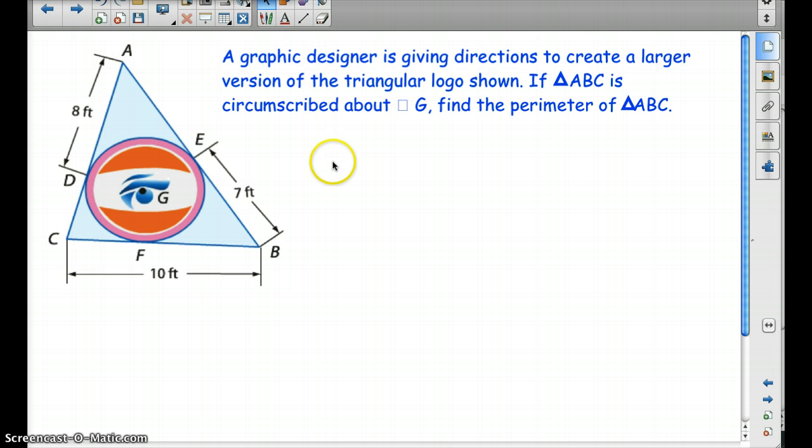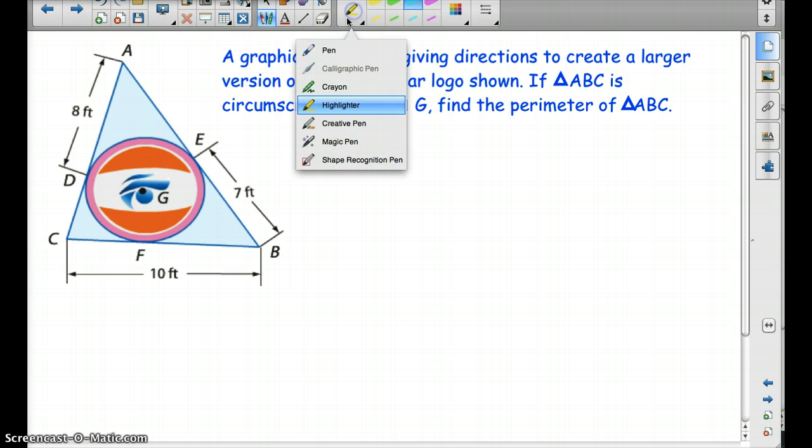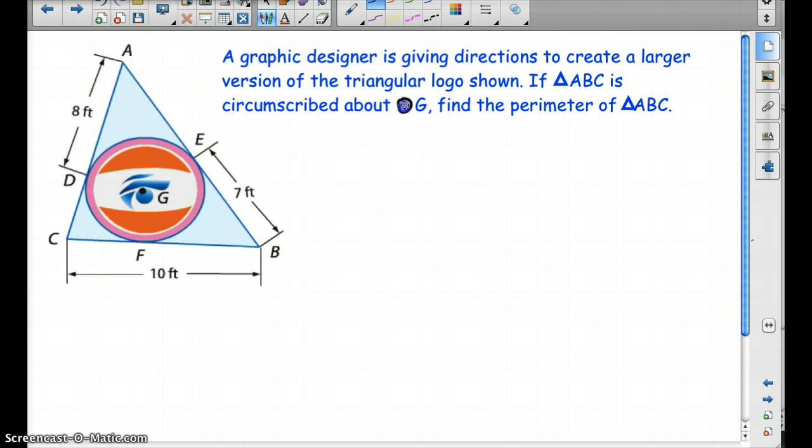So a graphic designer is giving directions to create a larger version of the triangular logo shown right here. Triangle ABC is circumscribed about circle G. For some reason my computer doesn't want to show the circles. Find the perimeter of triangle ABC. So we have to find the perimeter, and the perimeter is where we can add up all the sides.